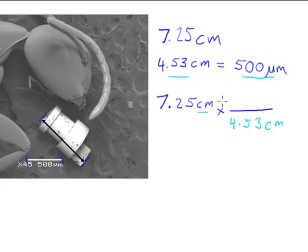And then, in order to be able to do this, I can't just multiply this number by anything, I have to multiply it by 1. Since these two are equal to each other, the ratio of them is equal to 1, so I have to put 500 micrometers or microns on top.